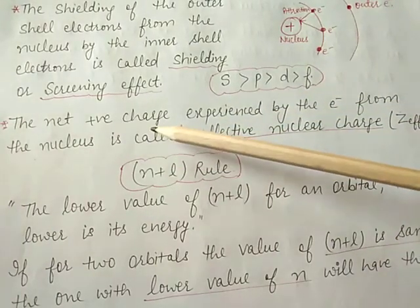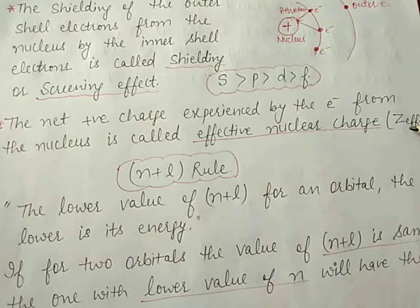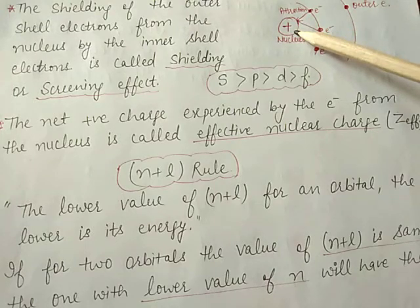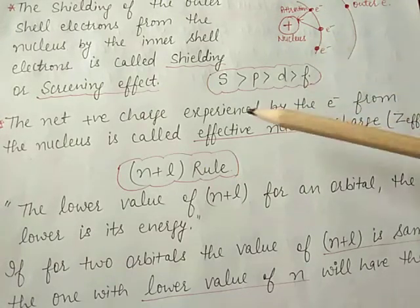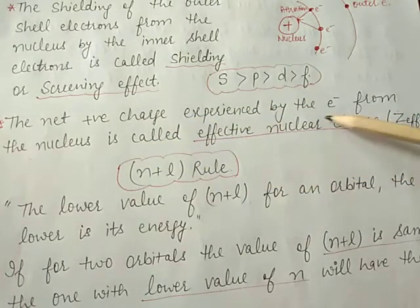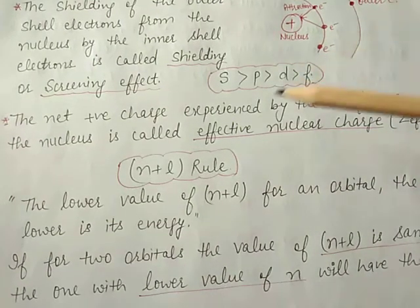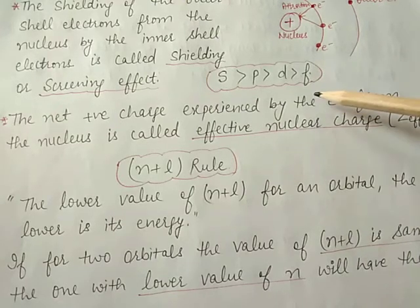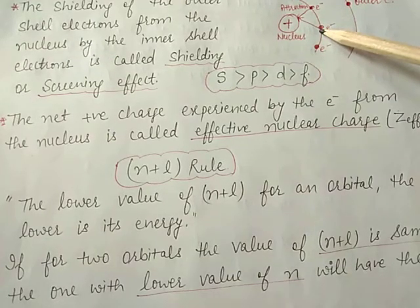The net positive charge experienced by an electron from the nucleus is called the effective nuclear charge, denoted as Z-effective. This depends on the repulsion and attraction of electrons towards the nucleus. The net positive charge shown by electrons from the nucleus is called effective nuclear charge. Z-effective decreases with increasing shielding effect.